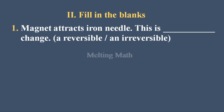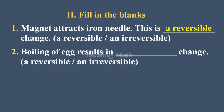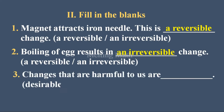Second section: Fill in the blanks. Question one — a magnet attracts an iron needle; this is a blank change — reversible or irreversible? Definitely it's a reversible change, because once the magnet attracts iron needles, we can separate the needle from the magnet, so it can come back to its original state. Question two — boiling of an egg results in a blank change. It's an irreversible change, because once the egg is boiled we cannot get back the unboiled egg.